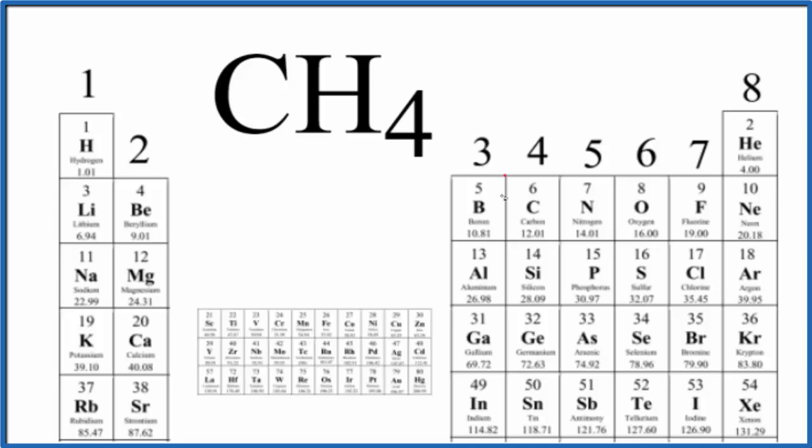Carbon is in group 14, sometimes called 4A, and has four valence electrons. Hydrogen is in group 1, so it has one valence electron. Multiply that by four, since we have four hydrogen atoms, eight total valence electrons for the CH4 Lewis structure.